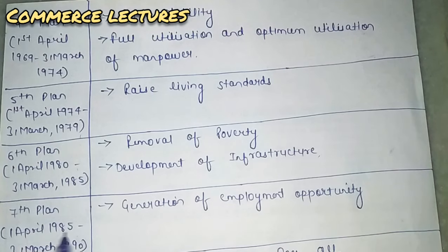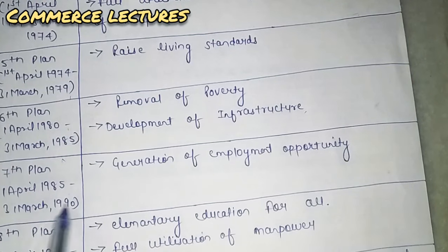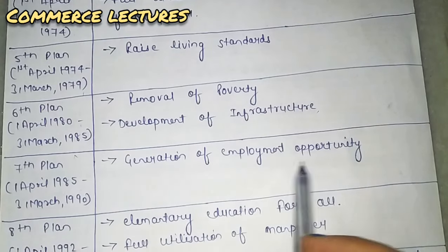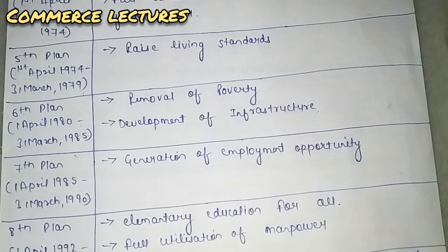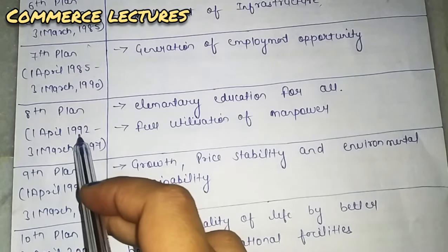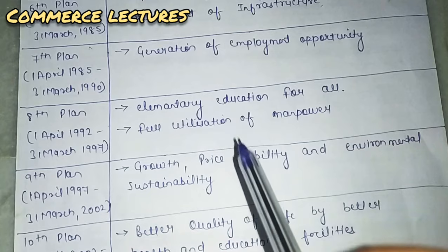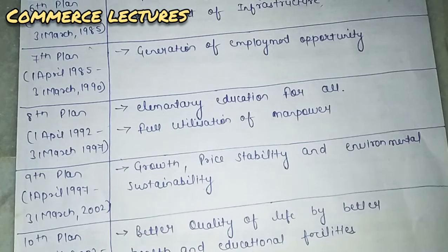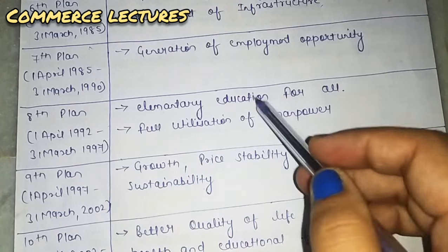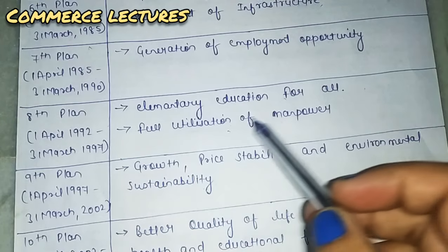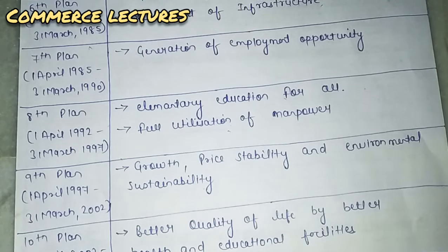The seventh plan ran from 1985 to 31st March 1990, with the aim of generation of employment opportunities. The eighth plan ran from 1992 to 1997. Its main motives were elementary education for all — basic or primary education for everyone — and full utilization of manpower.